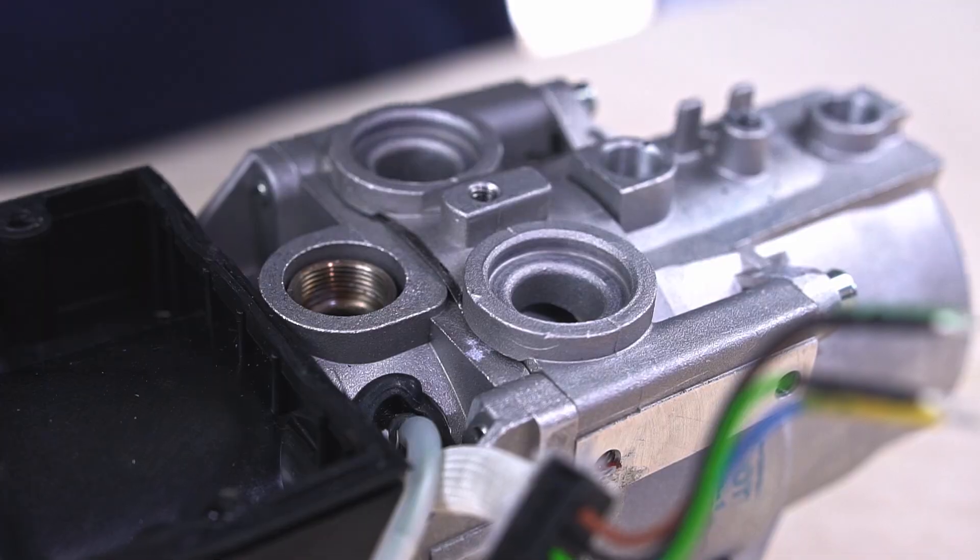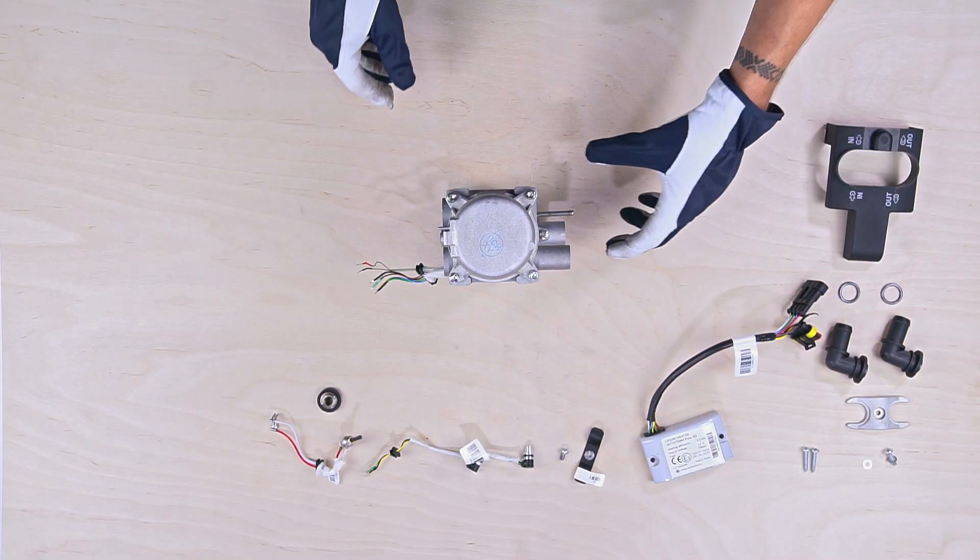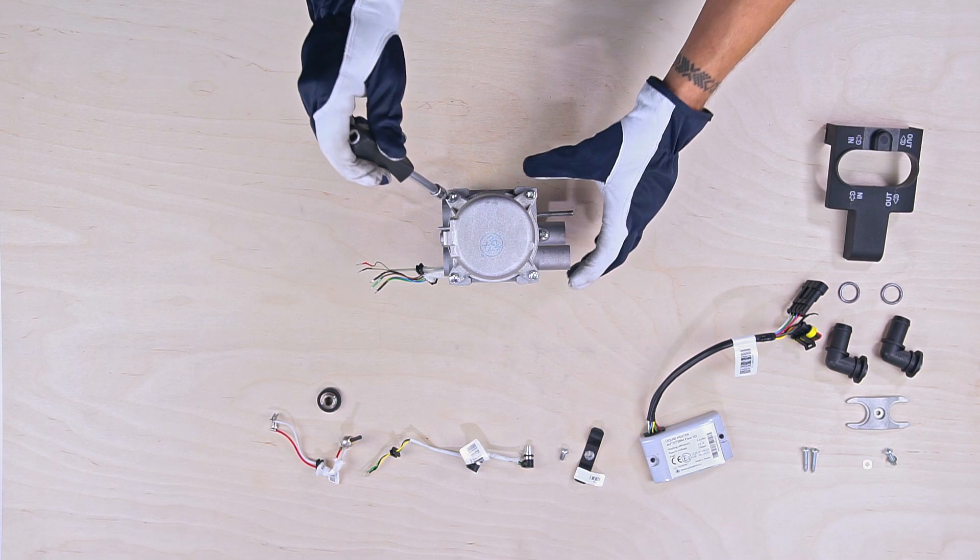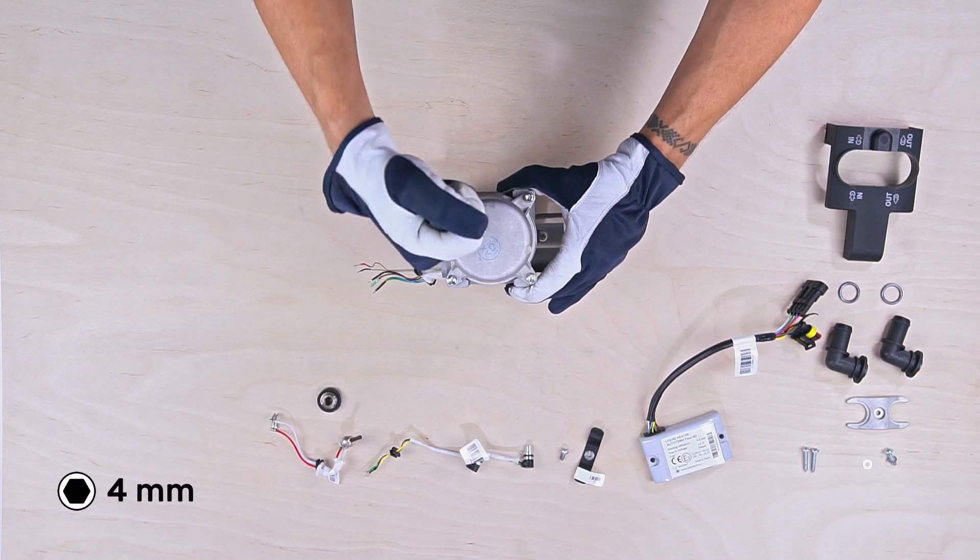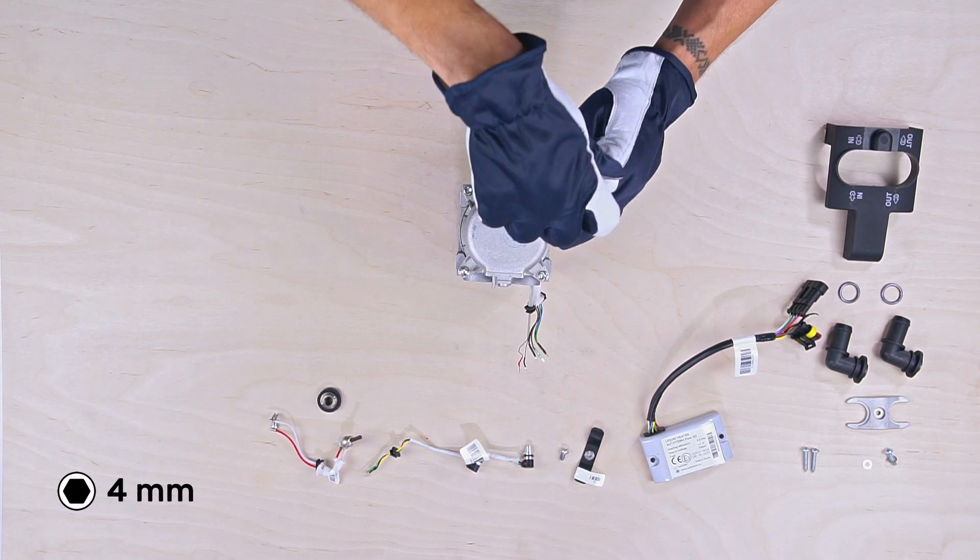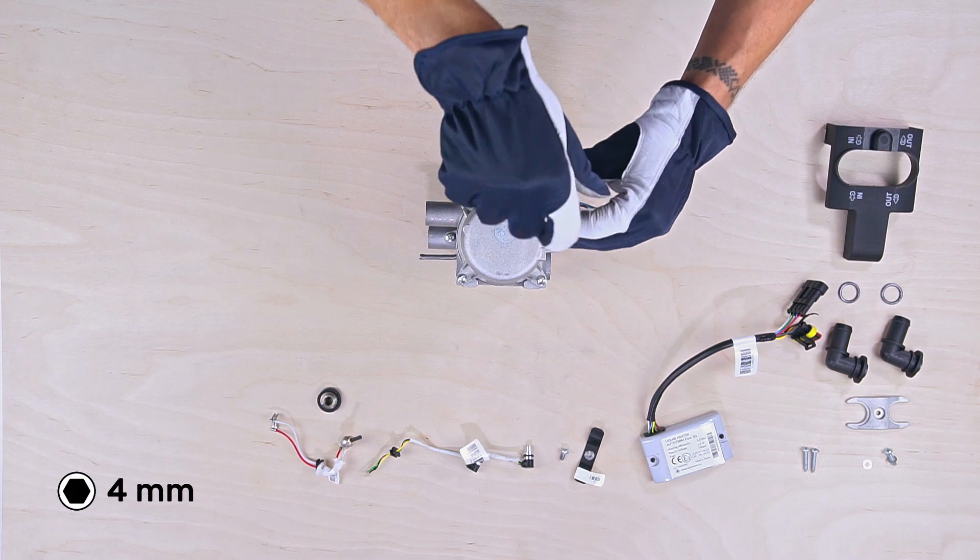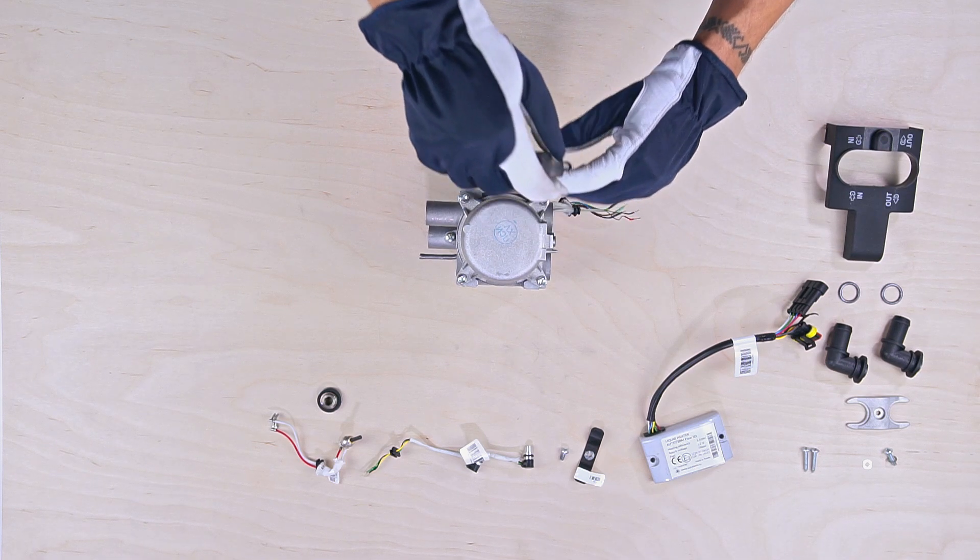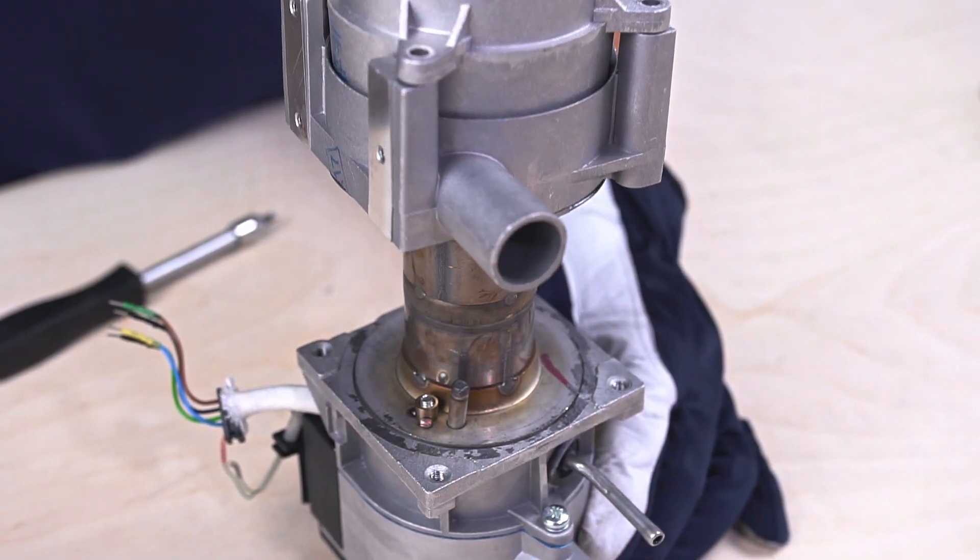When completed, put the heater down with the air pump cover facing down. With the 4mm Allen key, unscrew the four bolts that hold the casing and heat exchanger. Remove the bolts and take off the heat exchanger.